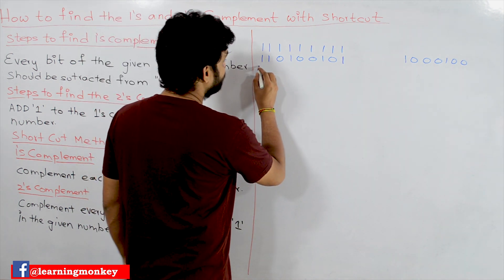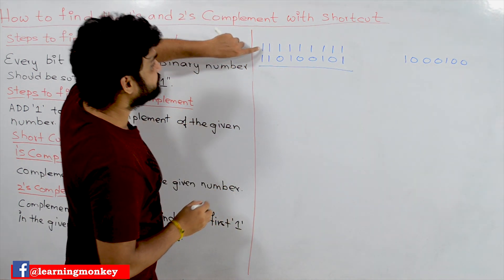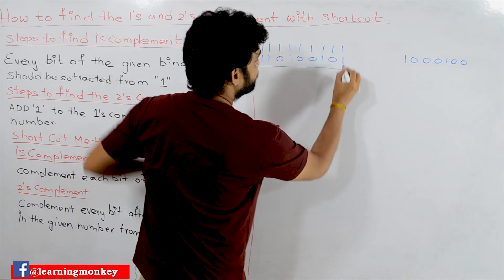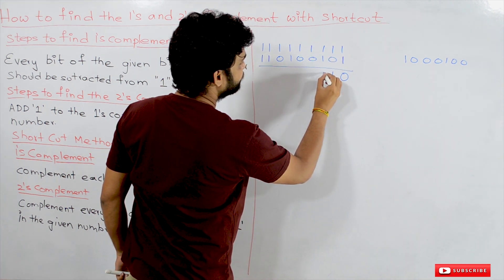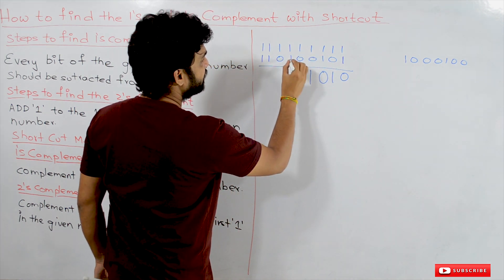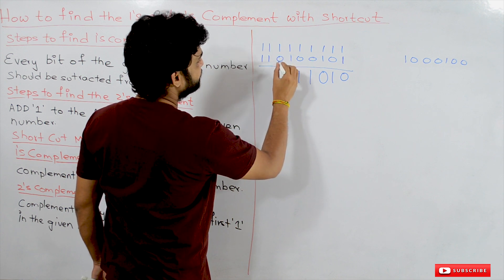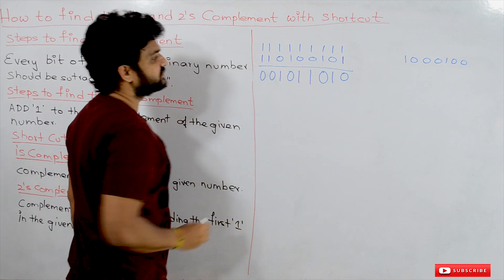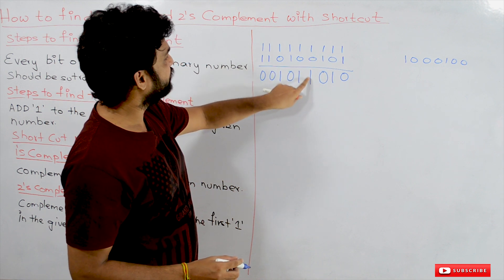We are directly subtracting each bit from one: 1 minus 1 is 0, 1 minus 0 is 1, 1 minus 1 is 0, 1 minus 0 is 1, 1 minus 0 is 1, 1 minus 1 is 0, 1 minus 0 is 1, and 1 minus 1 is 0.